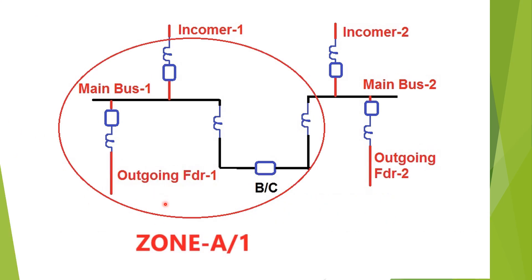A simple arrangement has been shown for a two main bus system connected by a bus coupler breaker. Main bus one and main bus two are connected via bus coupler. In main bus one, incomer one and outgoing feeder one are connected, and in main bus two, incomer two and outgoing feeder two are connected. These two main buses are connected via the bus coupler breaker.